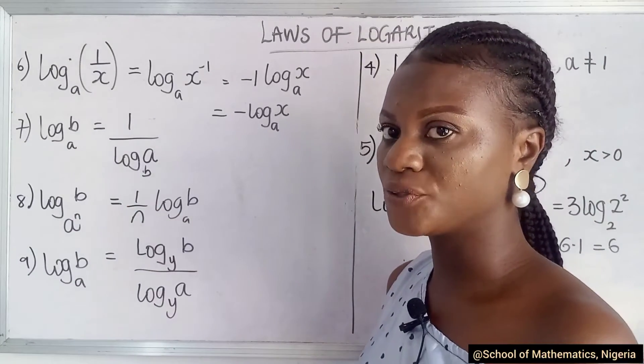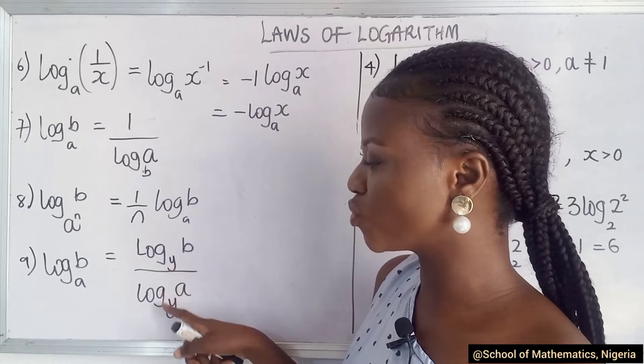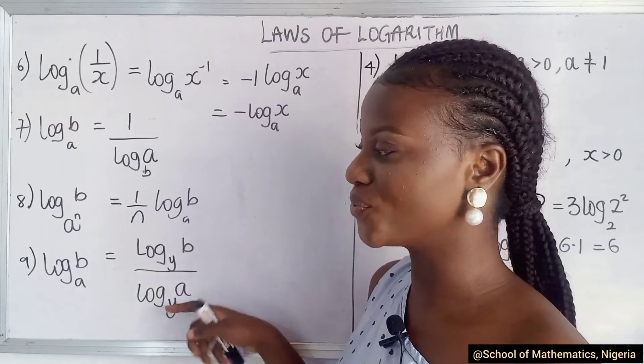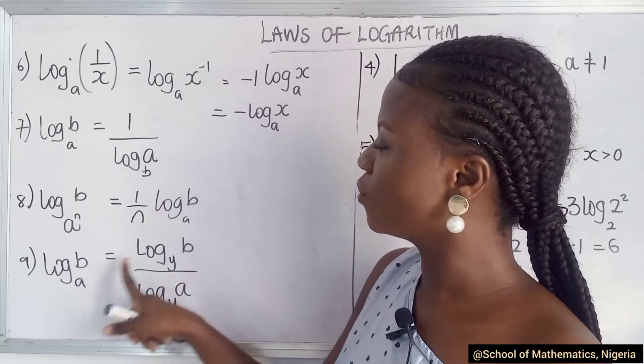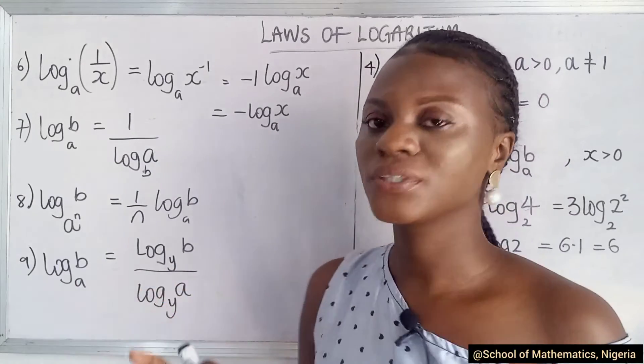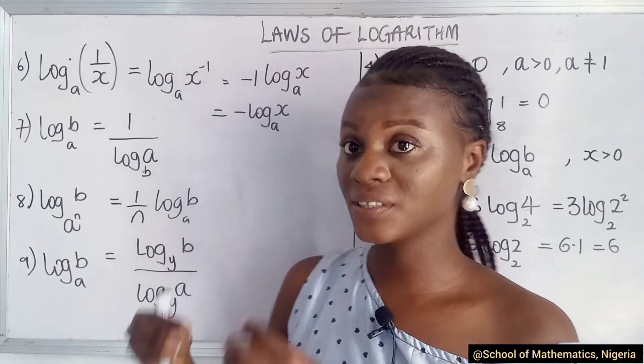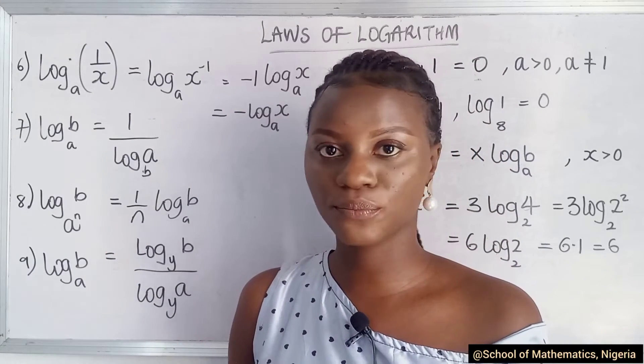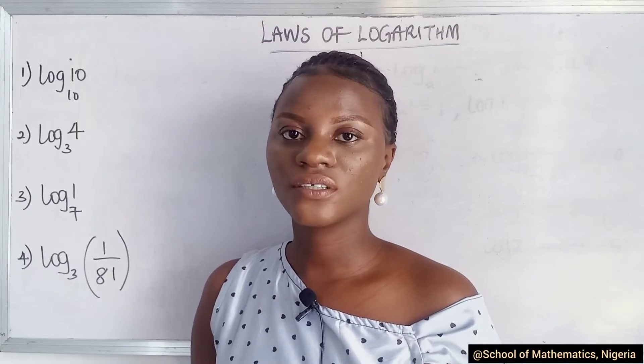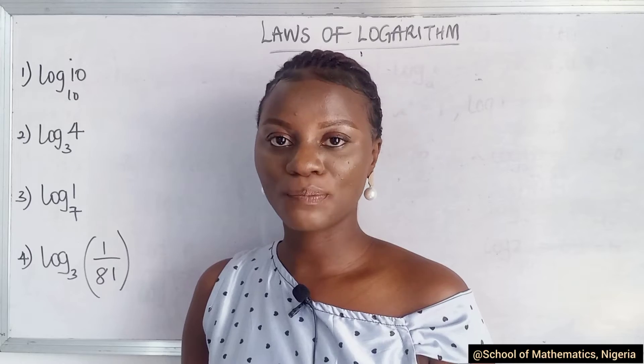And the last rule we'll be treating today is this case, where you have the log to A of B. Then you bring in a value. Make sure what you are doing for the numerator, you're doing it for the denominator too. That's the rule of math. You have to do what you do on top for the bottom. So we're bringing in the value Y for B, and also the value Y for A. That's what one of the rules says. So we're going to stop here. We have numerous rules. We have a lot of rules that you have to follow. But with these basic rules, you should be able to solve examples on logarithm. So let's solve some examples using our rules. Having learned the laws of logarithm, let's solve some examples, using or applying the rules.